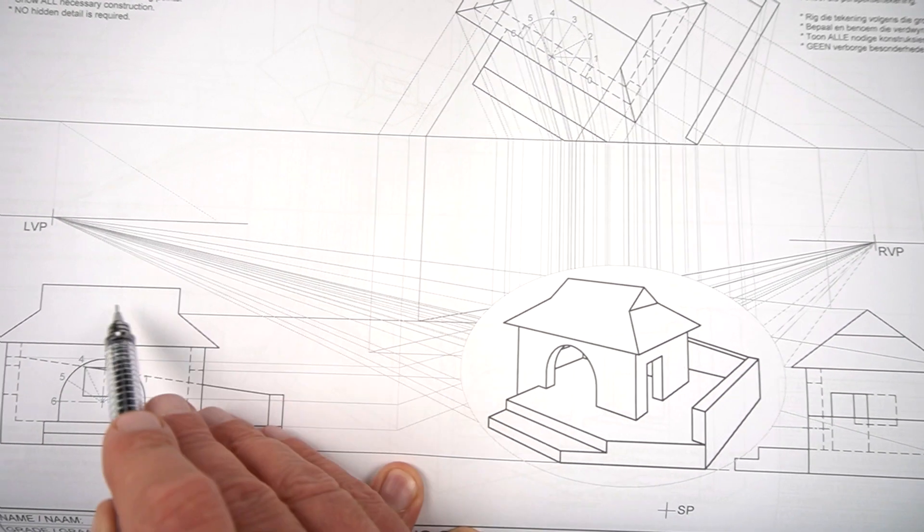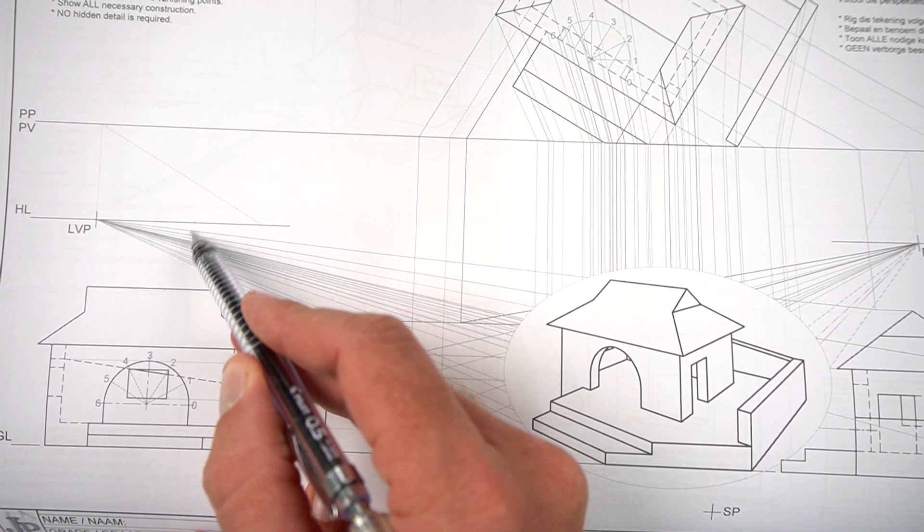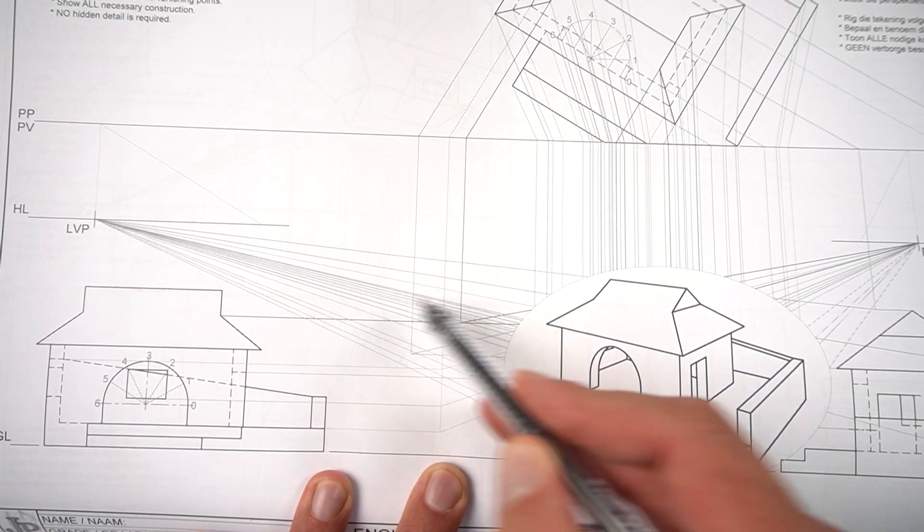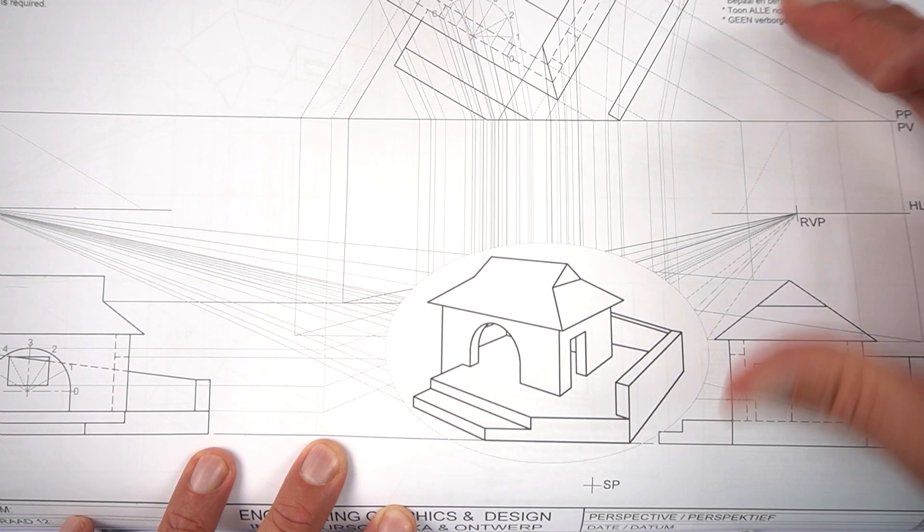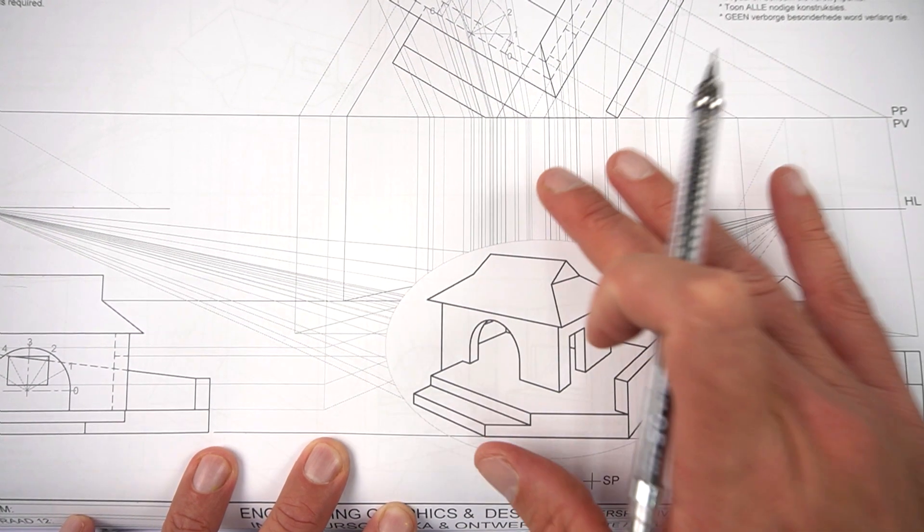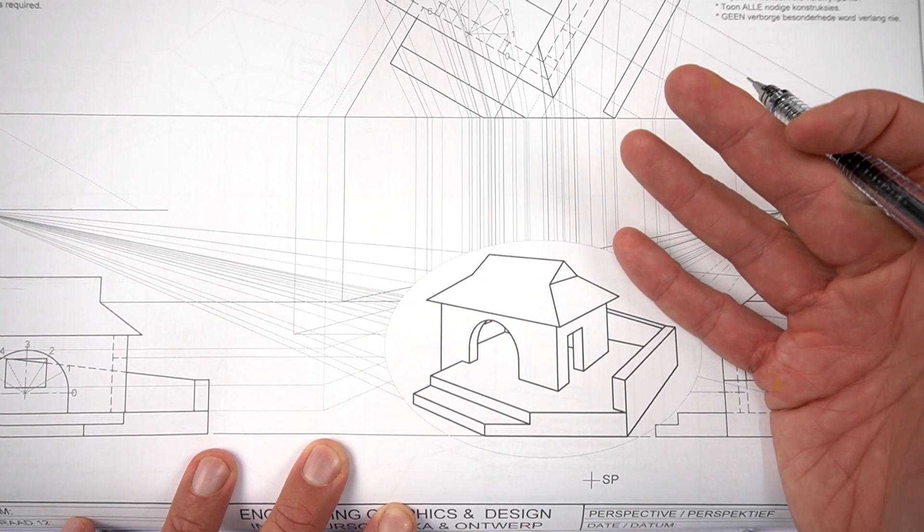You can pick any one—53, 52, doesn't matter—but there's already a spacing for your picture plane, your ground line. Their HL is just above this roofage. You can just move that HL down and that will give you a correct angle on your own media center.